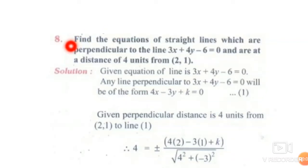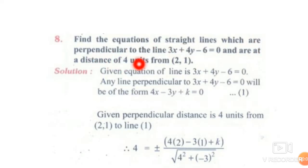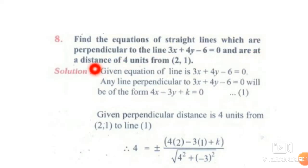Next is 6.3. Find the equation of straight lines which are perpendicular to the line 3x plus 4y minus 5 equal to 0, and are at a distance of 4 units from (2, 1).